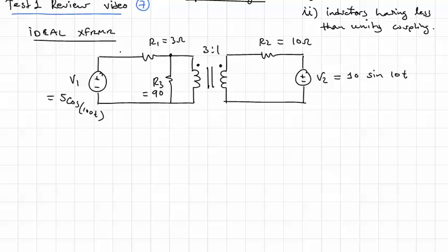And the question is, what is the current I flowing from the V1 source. So to solve any ideal transformer problem, what you want to do is you want to reflect everything to one side of the transformer and get rid of the transformer. So we can either reflect to the right or reflect the circuit on the right to the left, and that is actually what we're going to do.